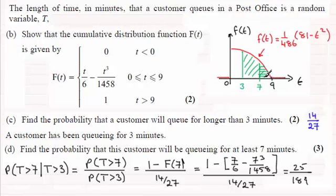What we're doing is comparing essentially this area with more than three. It's that proportion. How does waiting more than seven minutes compare with waiting more than three minutes? So it's this area compared to the whole area there, which is 25 over 189. So I hope that's given you some understanding of that question.